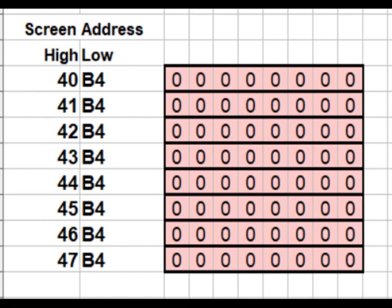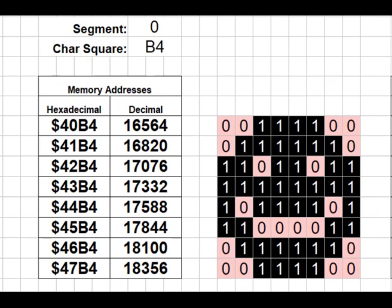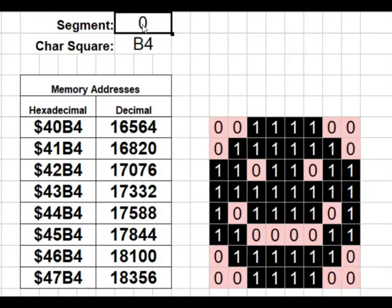Although it seems convoluted, getting the memory address to print an 8x8 character actually only requires two steps. I've made a little sheet in OpenOffice — I'll make it available for download. The only two things we need when drawing a character are: which segment, and which character within that segment. The segment will give us either 0x40, 0x48, or 0x50 as the top byte. The low byte always matches the character square we're looking at.